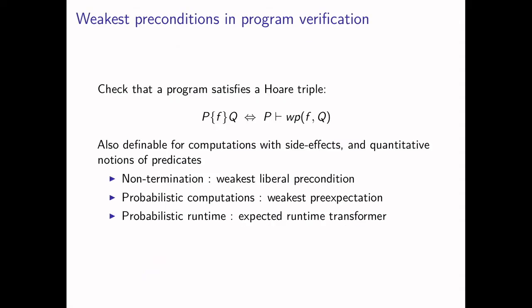Our motivation behind this work is studying the notion of weakest precondition in a formal manner. In a very simplified way, in program verification, weakest preconditions can be used to check that a program satisfies a Hoare triple. We have a program specified by a Hoare triple P as a precondition and Q as a postcondition. This Hoare triple is satisfied only if P implies the weakest precondition of F and Q. This is a very useful technique that can be applied in a lot of settings, for instance for programs with side effects such as non-termination or probabilities.